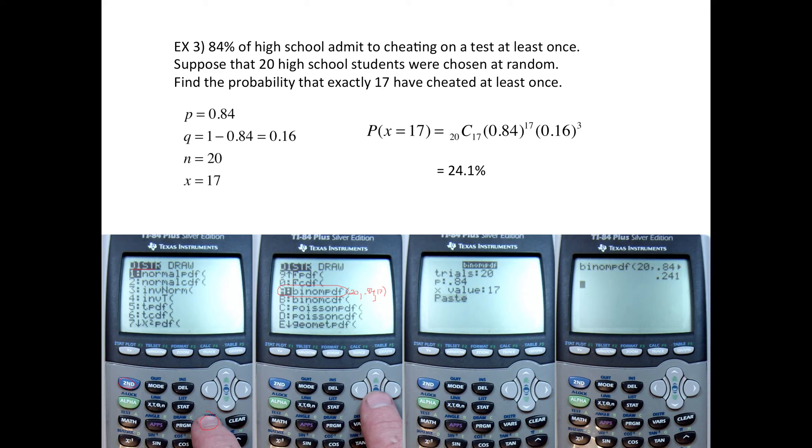Okay, there's just one more type of example that we need to do for this section. So there's this multiple choice test. Each one has A, B, C, or D. In other words, four answers to choose from. 20 questions total, but suppose you didn't study at all, and you have to guess on each and every question.